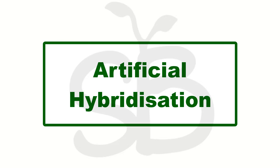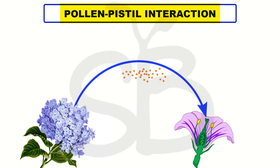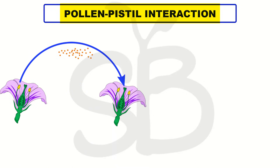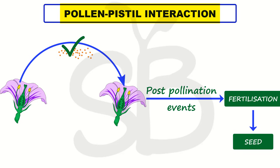If you are curious about this topic, you will be very interested in this video. That is, what is the Pollen and Pistil Interaction. Please check the previous parts in the video description. Okay, let's start the video. We are going to discuss the Pollen and Pistil Interaction, including post-pollination events, fertilization, seeds, and fruit.